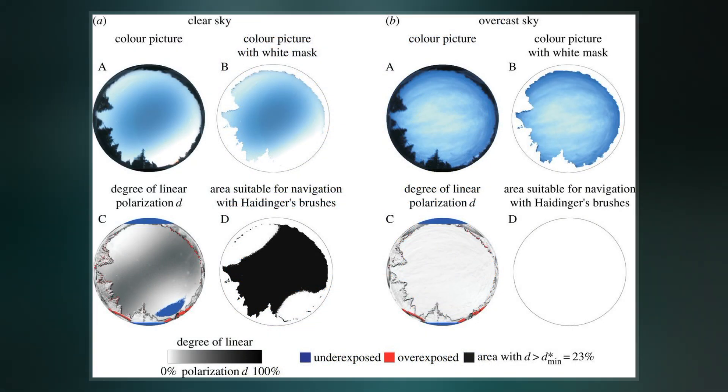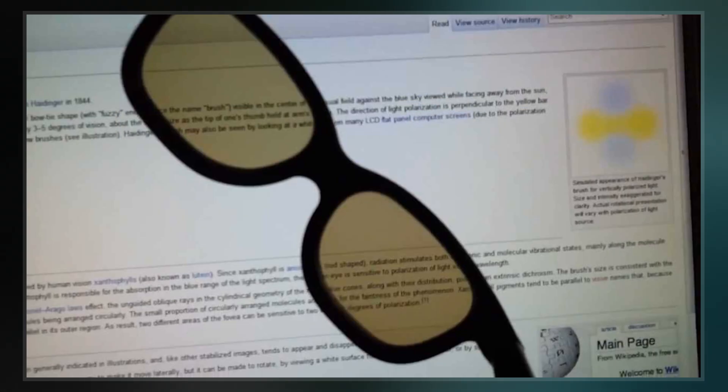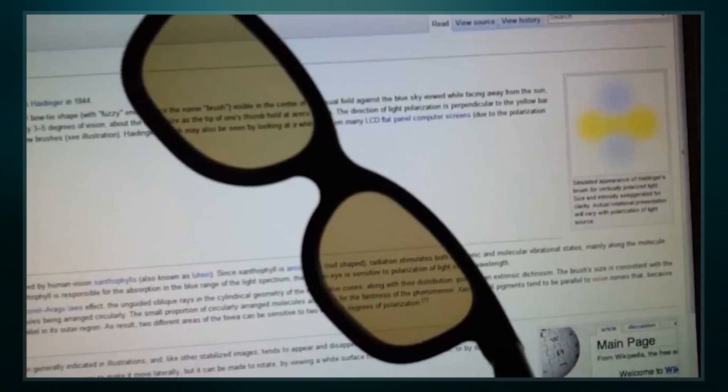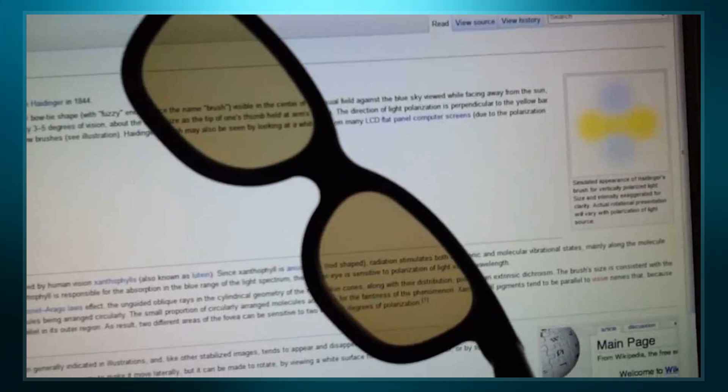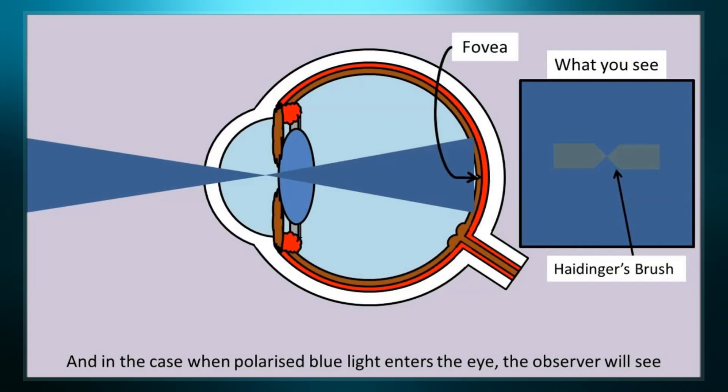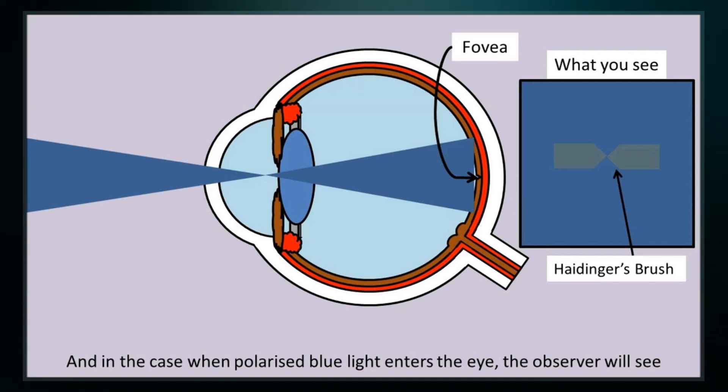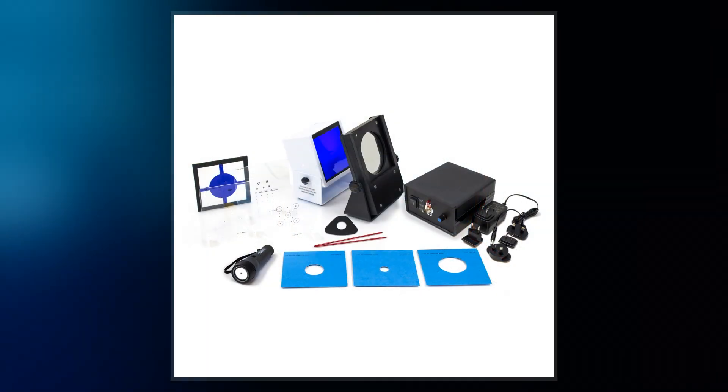Haidinger saw it when he looked through various minerals that polarized light. Many people are able to perceive polarization of light. Haidinger's brushes may be seen as a yellowish horizontal bar or bowtie shape visible in the center of the visual field against the blue sky viewed while facing away from the sun or on any bright background.